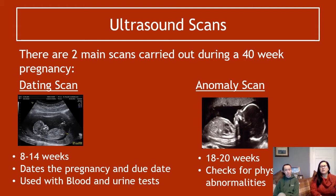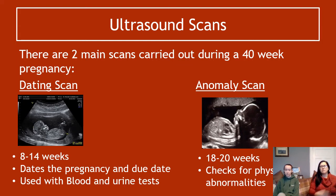What we're looking for in the anomaly scan is things like limb deformation. They'll check the circumference of the head, the length of the femur — which is the main leg bone — and the humerus length, which is the main arm bone, and they'll check for undergrowth or overgrowth of those areas.